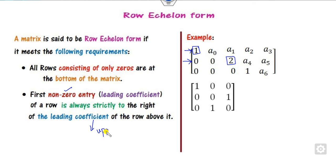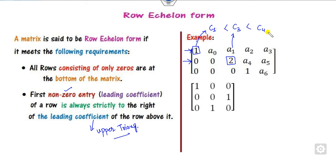Another property is that the first non-zero leading entries must be strictly to the right of the leading entry in the row above — making it an upper triangular matrix. The first non-zero leading entry lies in column C1, the second in column C3, and in another case C4, so the column indexing is preserved.